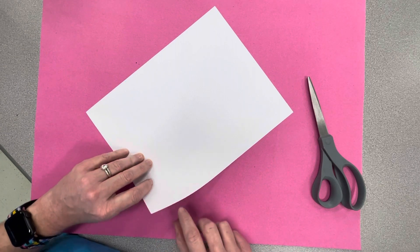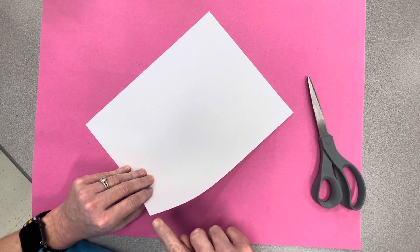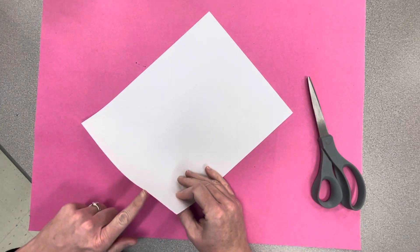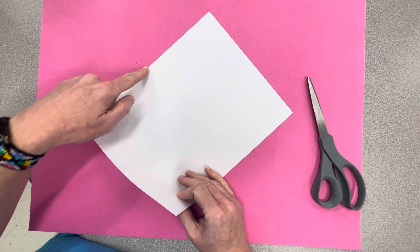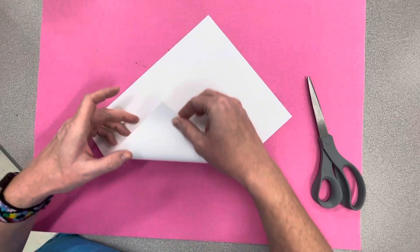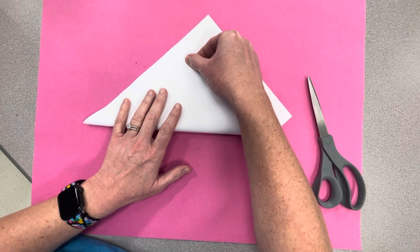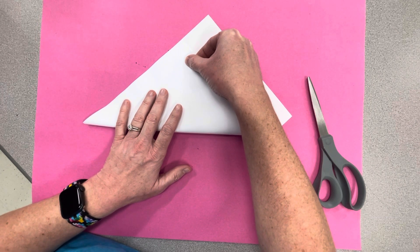So that this side right here is going to line up with this side. So I'm taking the corner, I'm going all the way up, and I'm going to make my two edges match. When you do this you should create a really large triangle.